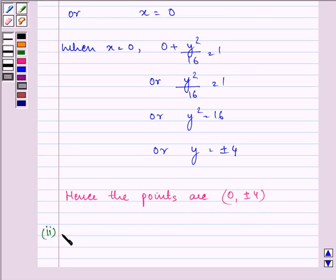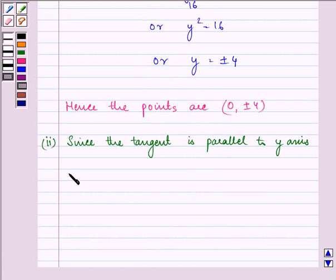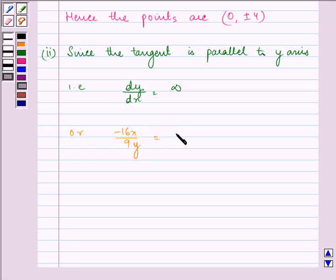Now for the second part, the tangent is parallel to y-axis, which means dy/dx = infinity. That is, -16x/9y = infinity, or 9y = 0, so y = 0.